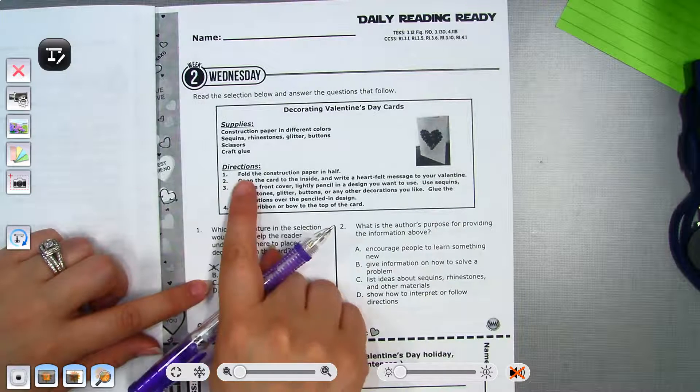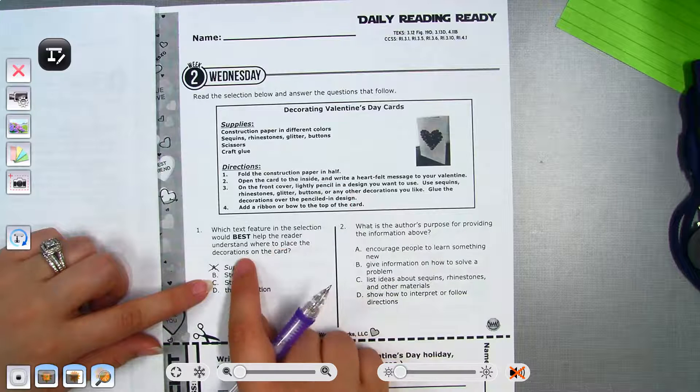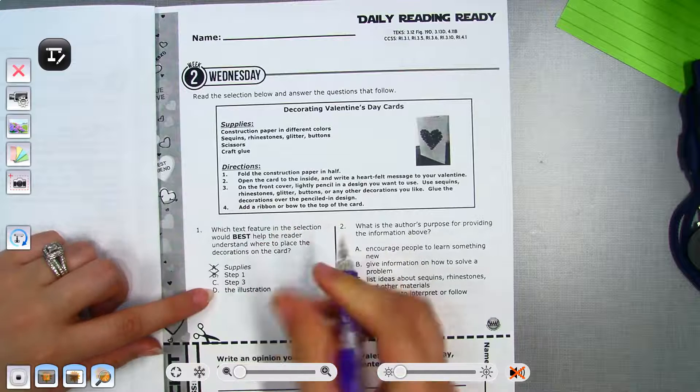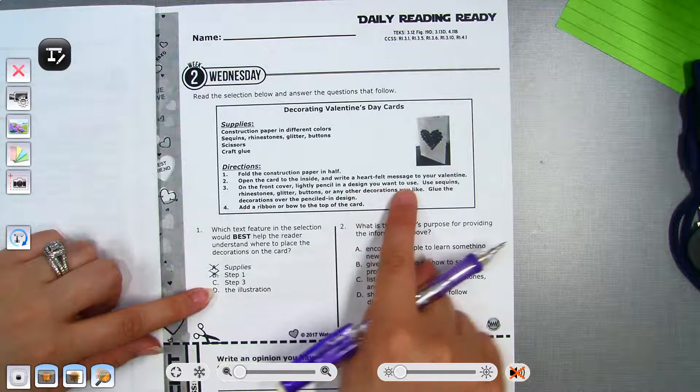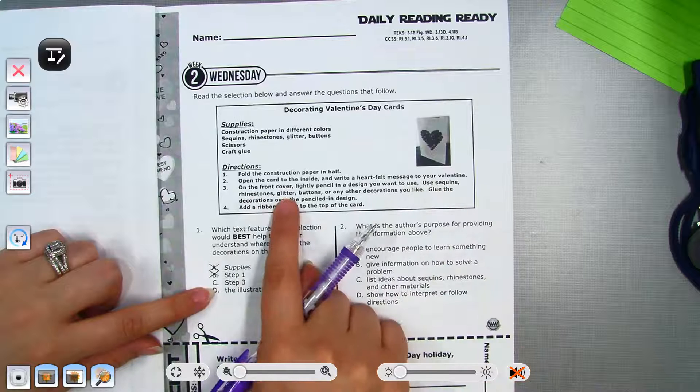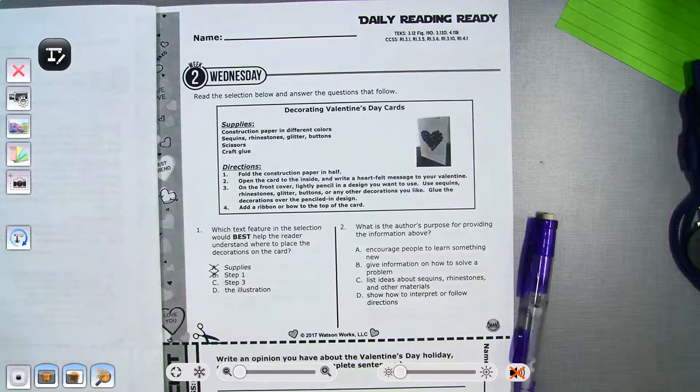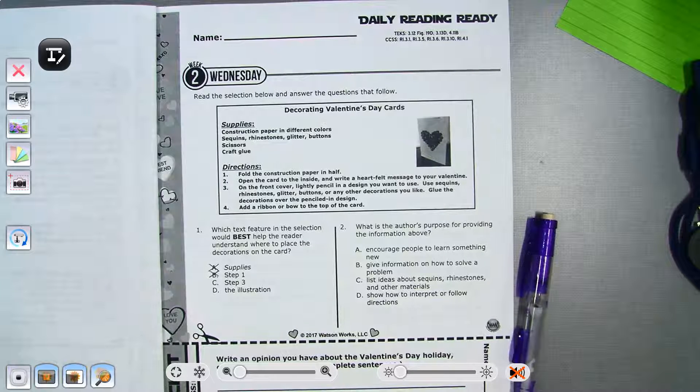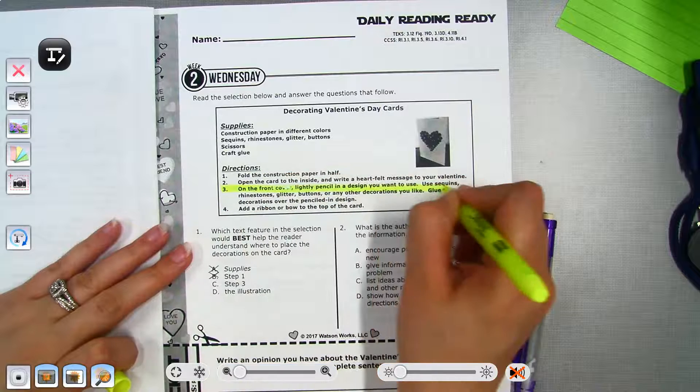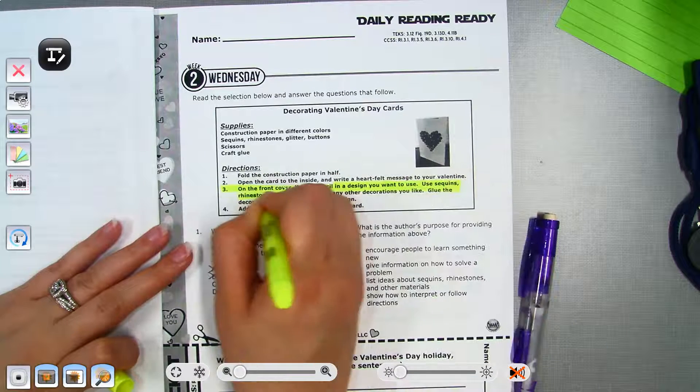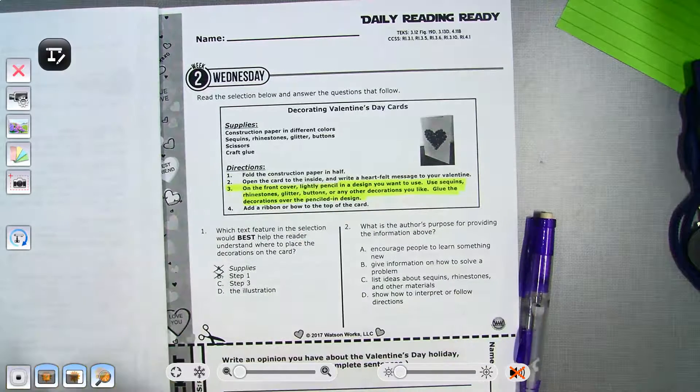Step one, fold the construction paper in half. That doesn't tell me where to place the decorations on the card. I'm going to mark that one out. Step three, on the front cover, lightly pencil in a design you want to use. Use sequins, rhinestone, glitter, buttons, and any other decorations you like. Glue the decorations over the penciled-in design. So yes, I'm going to highlight that. Step three is where I am going to find my answer.